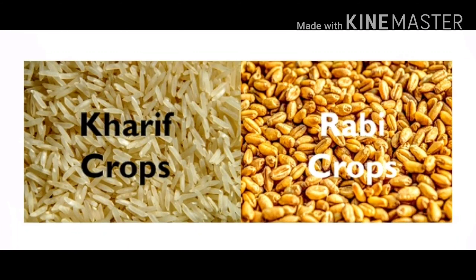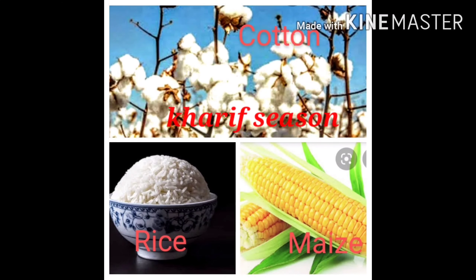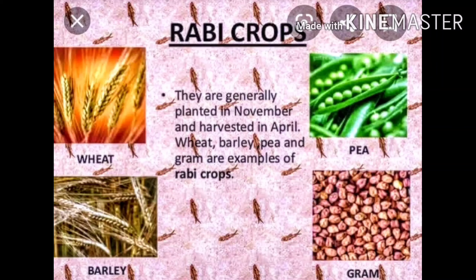We had learnt about the two main seasons. We have learnt about the Kharif season and the Rabi season. The season from June to October is called the Kharif season. The season from October to March is called the Rabi season.